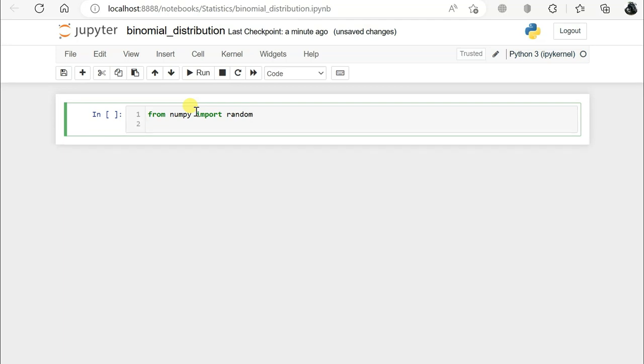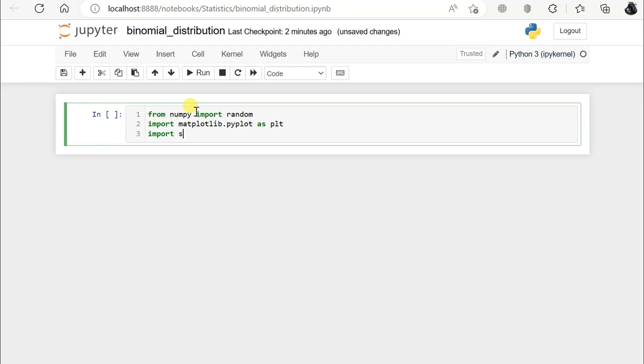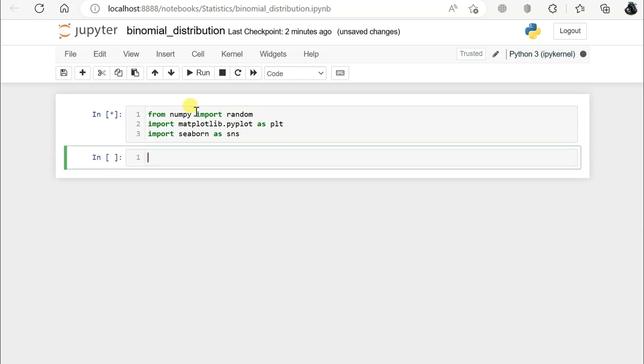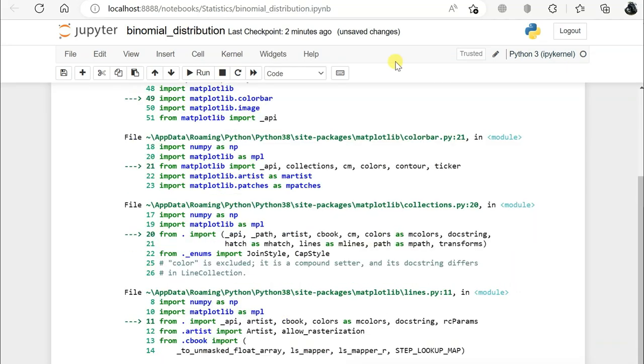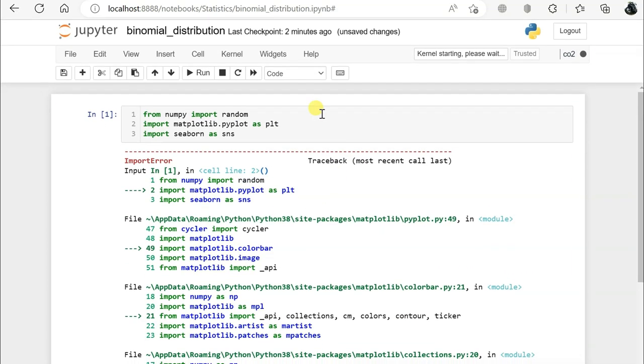We will be seeing this example in Python. I created one notebook and here I will be importing all the required libraries: numpy, random from numpy, matplotlib, and seaborn. We will be using distplot to see the binomial distribution.